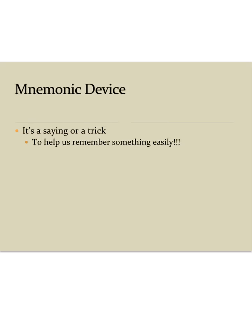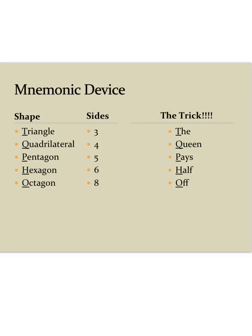Now we will have a mnemonic device for this lesson. This is like a saying or a trick, and it will help us remember something easily. Our mnemonic device for this lesson will be the queen pays half off. This will stand for triangle, quadrilateral, pentagon, hexagon, and octagon.